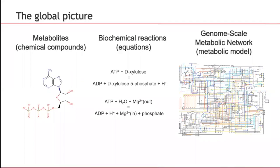The global picture really goes through several layers. We have the description of the metabolites, which are related to chemical compounds described in terms of atoms. There is the expression of the biochemical reaction — these are equations with symbols, with metabolites as symbols. And the global picture is the genome-scale metabolic network for a given organism, which is the basis for metabolic models.